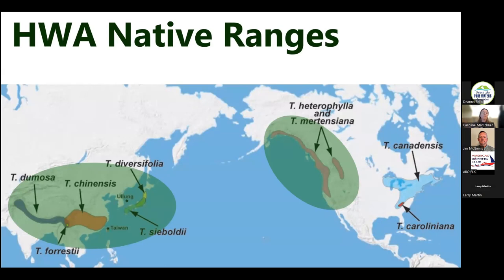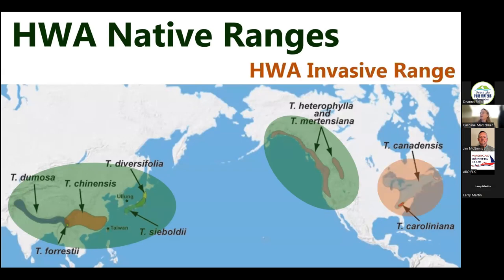If we step back and think about hemlocks, these are all the places in the world where there are native hemlocks — mostly North America and Asia. Both of these places already have HWA. All the hemlock woolly adelgid are all the same species; they started in Asia, moved to the West Coast sometime in the last million years, and then just recently arrived in our glaciated landscape here on the East Coast, where we have two species: the Carolina hemlock, which has a very restricted range in the southeast, and our beloved eastern hemlock.